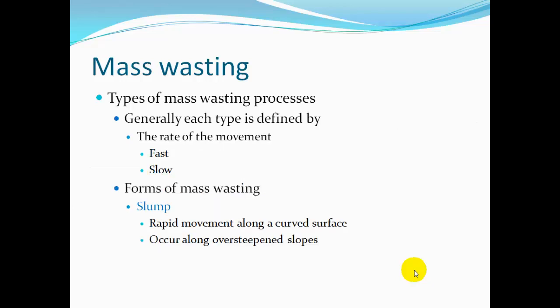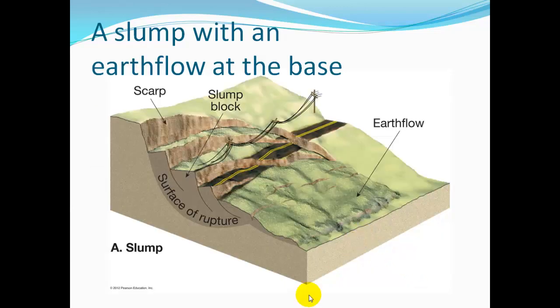Types of mass wasting are also defined by the rate of movement — fast or slow. Slump is rapid movement along a curved surface that occurs along over-steepened slopes. Here we have a slump where material slumped down the slope. It has a curved surface of rupture, an escarpment or steep face, slump blocks where pieces broke off, and an earth flow at the base.